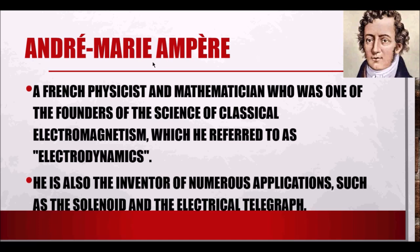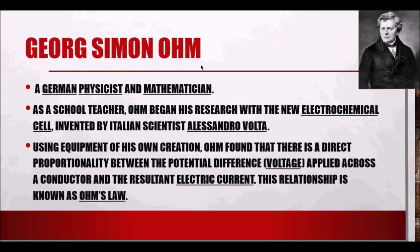Then we have George Simon Ohm, a German physicist and mathematician. Starting his research with the electrochemical cell invented by Alessandro Volta, Ohm found using his own equipment that there is a direct proportionality between the potential difference (voltage) applied across a conductor and the resultant electric current. This relationship is known as Ohm's Law, which Ohm formulated.